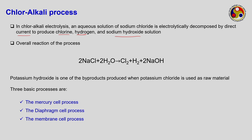The overall reaction is the sum of two half-reactions in the electrolytic cell. At the anode (positive), chloride ions combine to form chlorine gas and two electrons. At the cathode, reduction occurs: water is reduced to OH⁻ ions and hydrogen is liberated. The overall reaction is: NaCl + H₂O → Cl₂ + H₂ + NaOH. When KCl is the source, the product is KOH instead. Based on this, there are three processes: the mercury cell, the diaphragm cell, and the membrane cell.